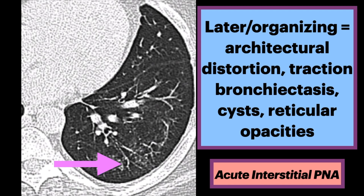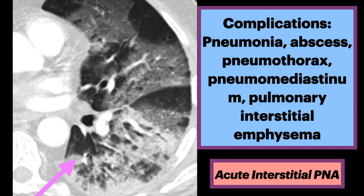Here is another case of late organizing phase with evolution of pulmonary consolidation into areas of reticulation and irregular opacities. Complications include pneumonia, abscess, pneumothorax, pneumomediastinum, and pulmonary interstitial emphysema.